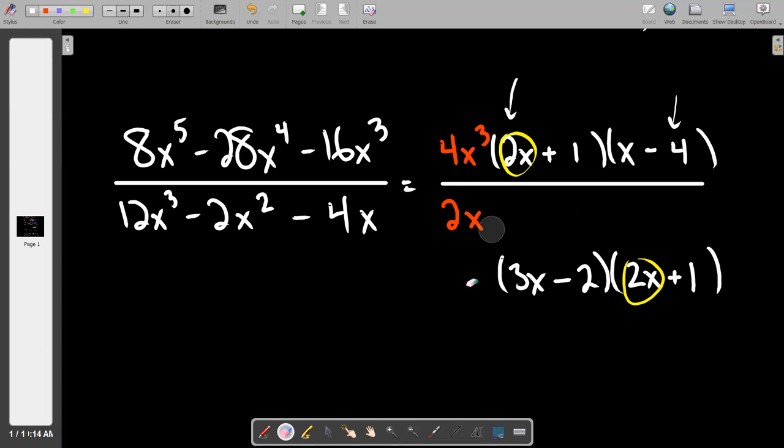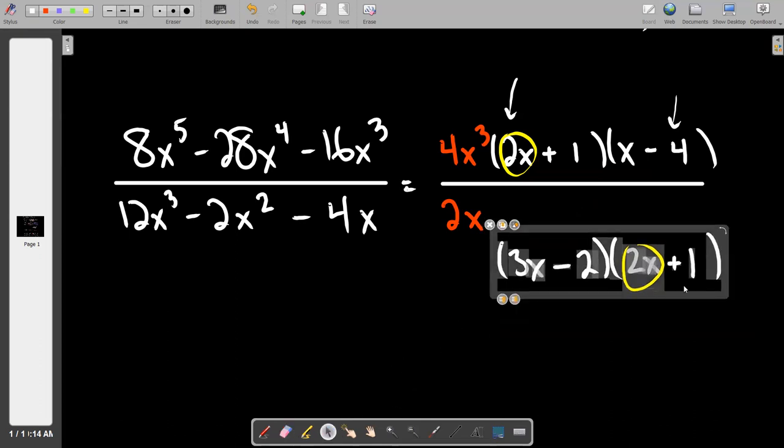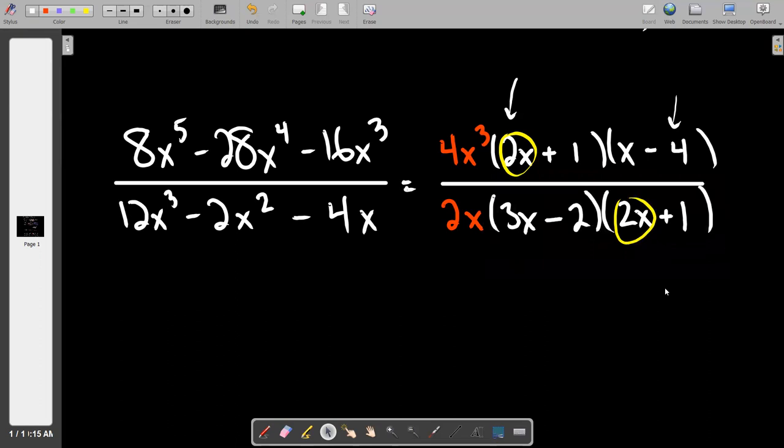When everything is said and done, your factoring is all done and this is what the problem looks like and it's ready to go. The goal now is to understand that the top has four factors: 4 is a factor, bunch of x's is a factor, 2x + 1 is a factor, x - 4 is a factor. The bottom also consists of four factors. Our job now is to go through and find ones that look the same. I would venture to say that 2x + 1 is now free to cancel 2x + 1.